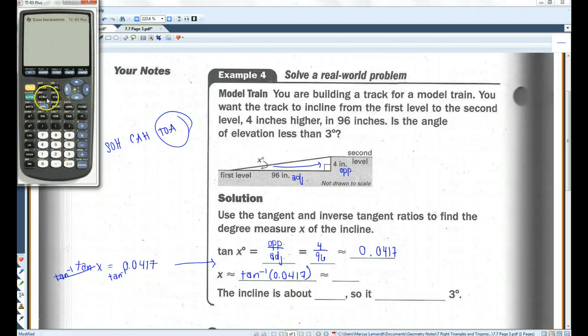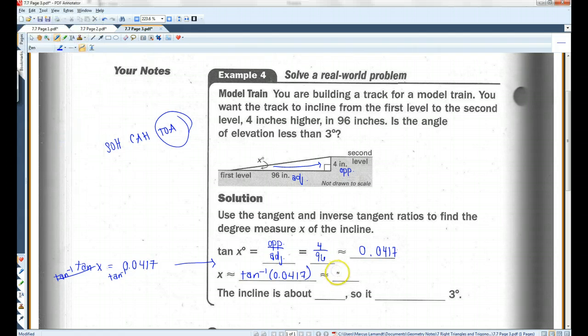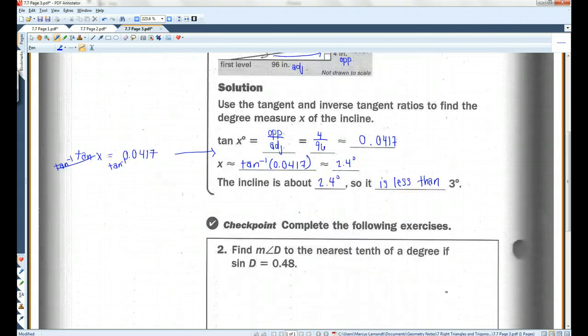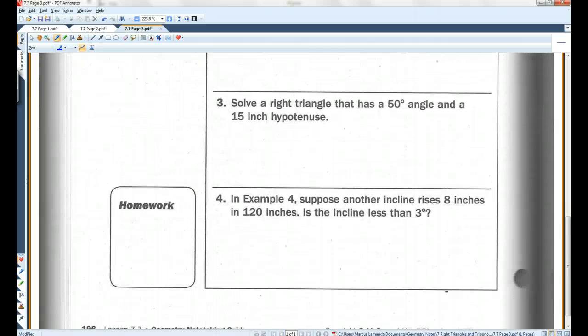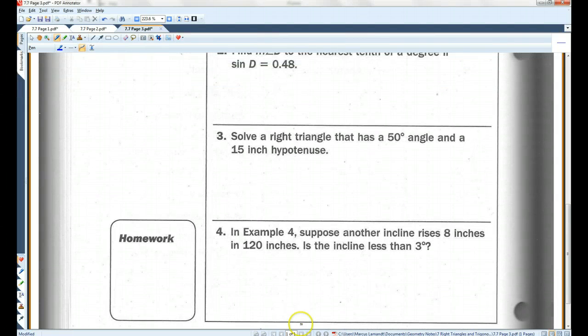Inverse tangent, 0.0417, approximately 2.4 degrees. The incline is about 2.4 degrees, so it is less than 3 degrees. I'll let you guys do the checkpoint, and that's all.